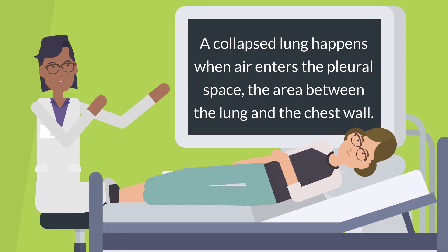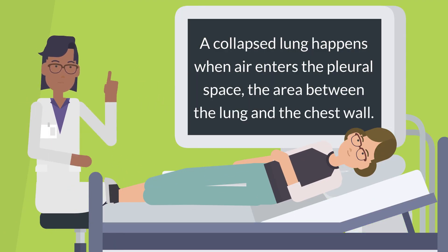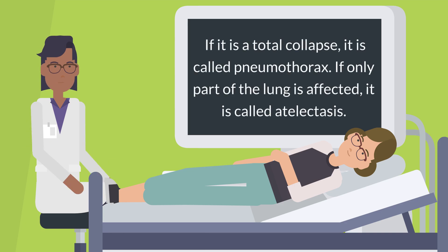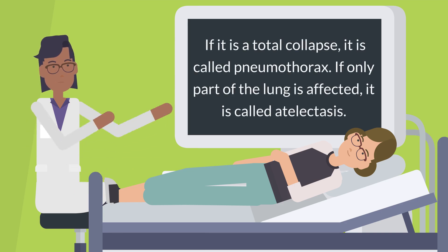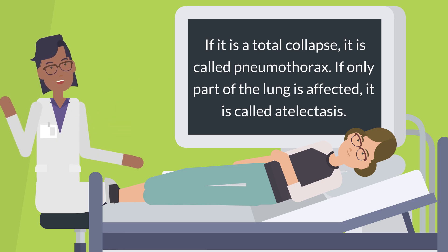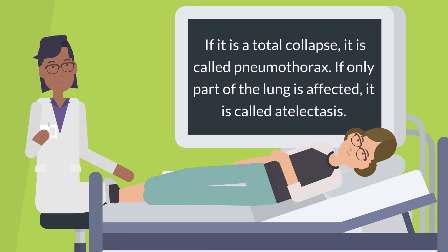A collapsed lung happens when air enters the pleural space, the area between the lung and the chest wall. If it is a total collapse, it is called pneumothorax. If only part of the lung is affected, it is called atelectasis.